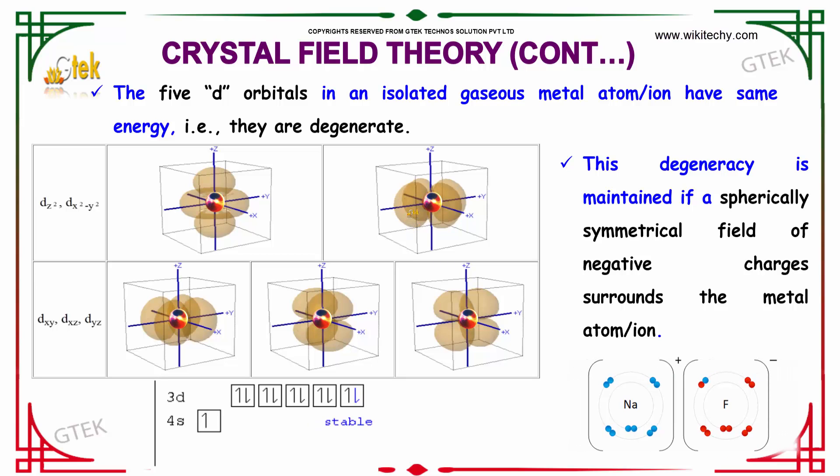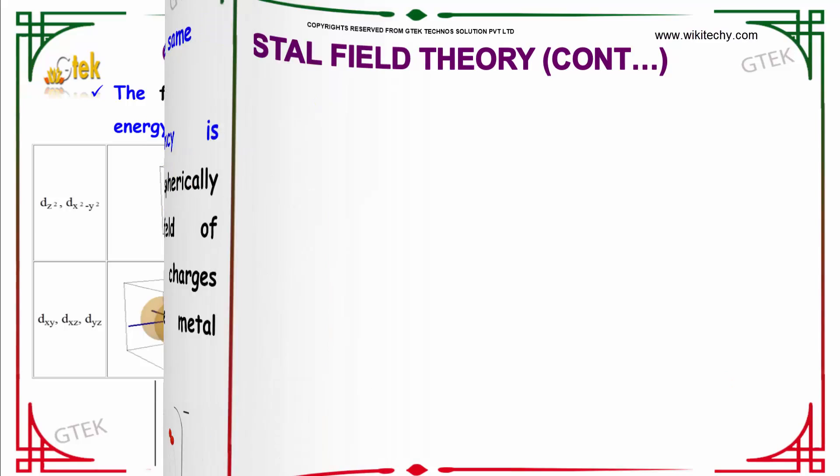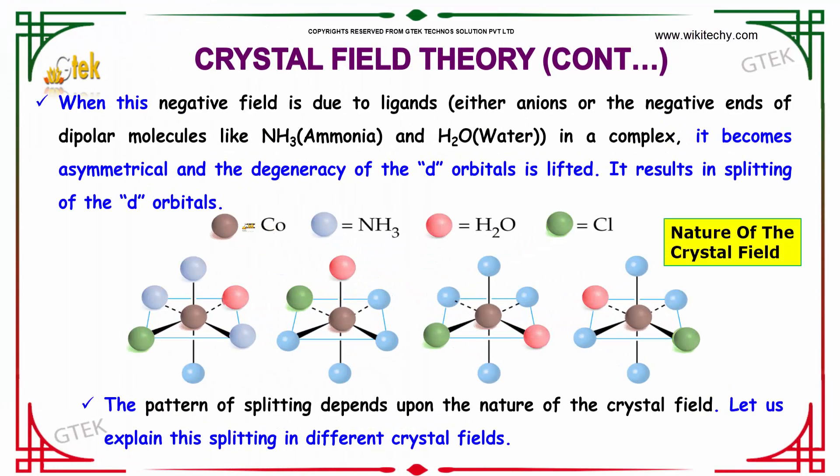This degeneracy is maintained if a spherically symmetrical field of negative charges surrounds the metal atom or ion. When this negative field is due to ligands—either anions or the negative ends of dipolar molecules like ammonia and water in a complex—it becomes asymmetrical and the degeneracy of the d orbitals is lifted, resulting in splitting of the d orbitals.